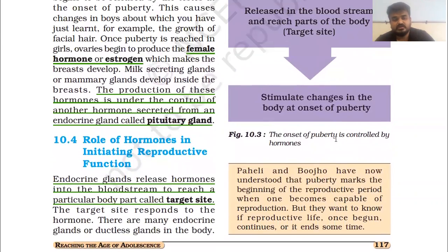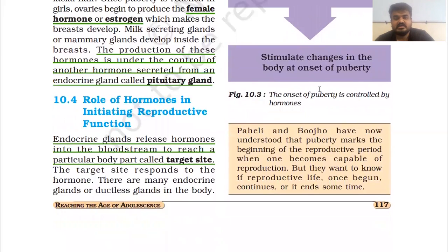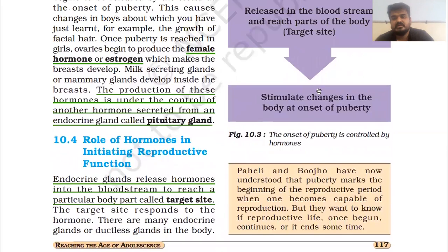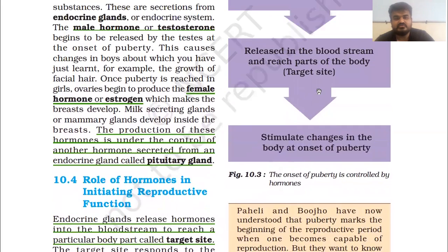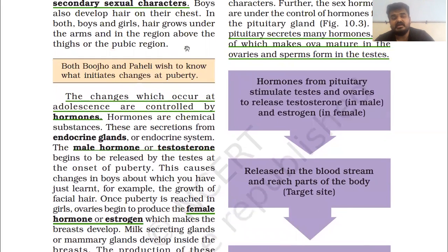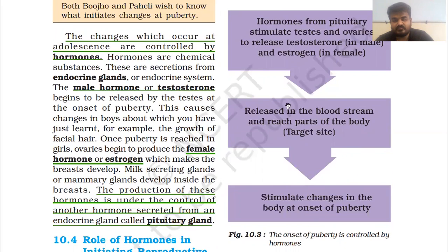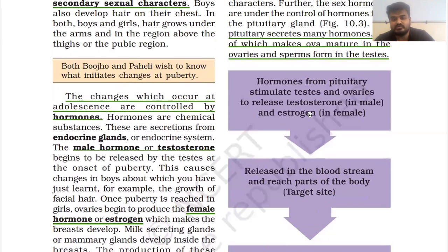That is what Topic 10.4 — the role of hormones in initiating reproductive functions — is about. I suggest you underline all the important things in your textbook and enlist the key points from both Topic 10.3 and 10.4, that is hormones, the target site, and mainly the flow chart given in Figure 10.3, which is the most important one.